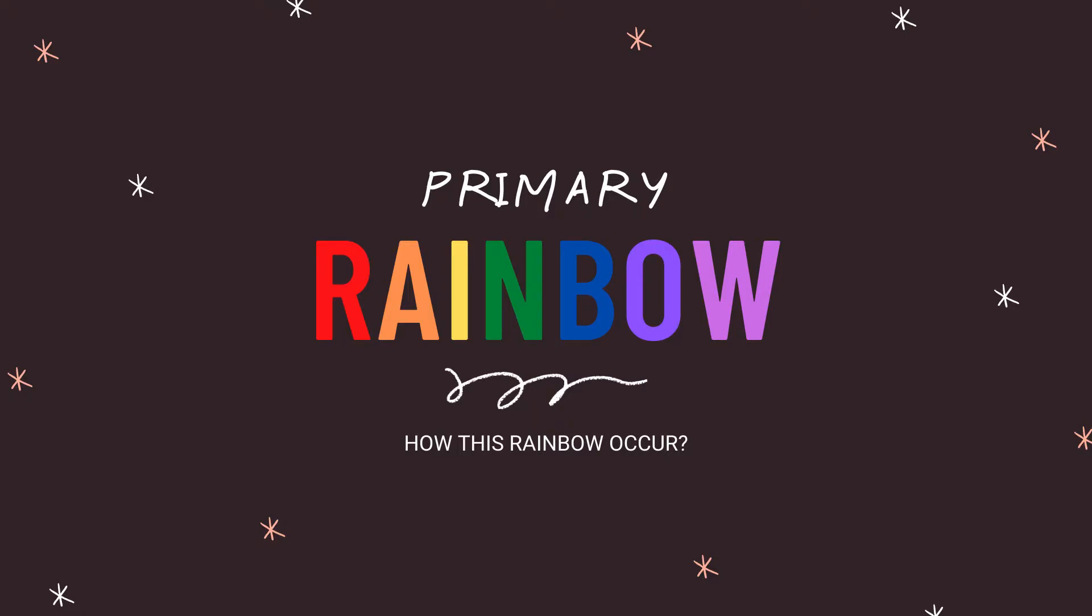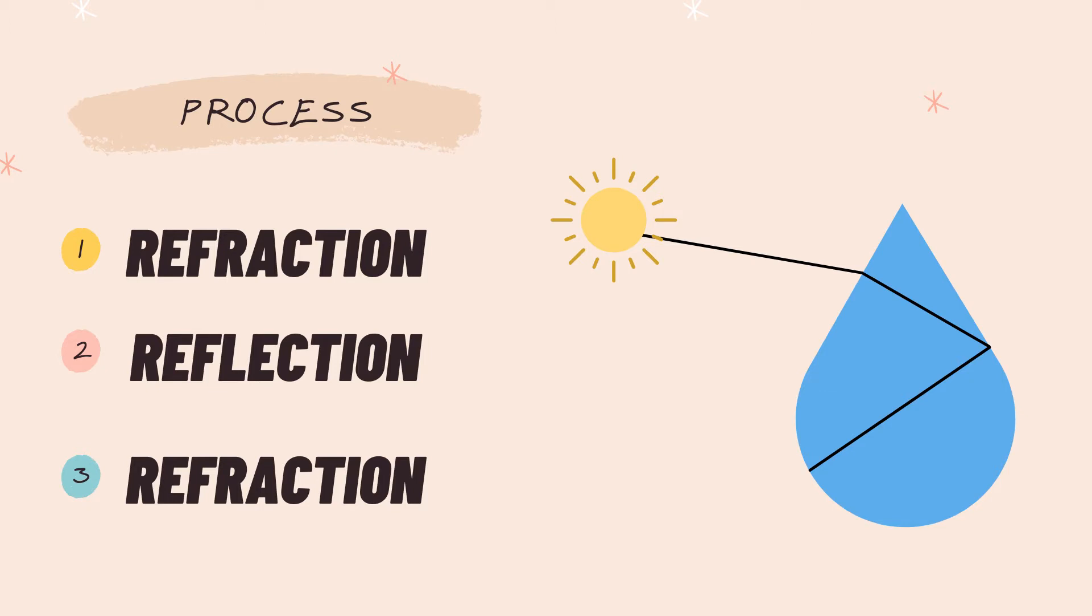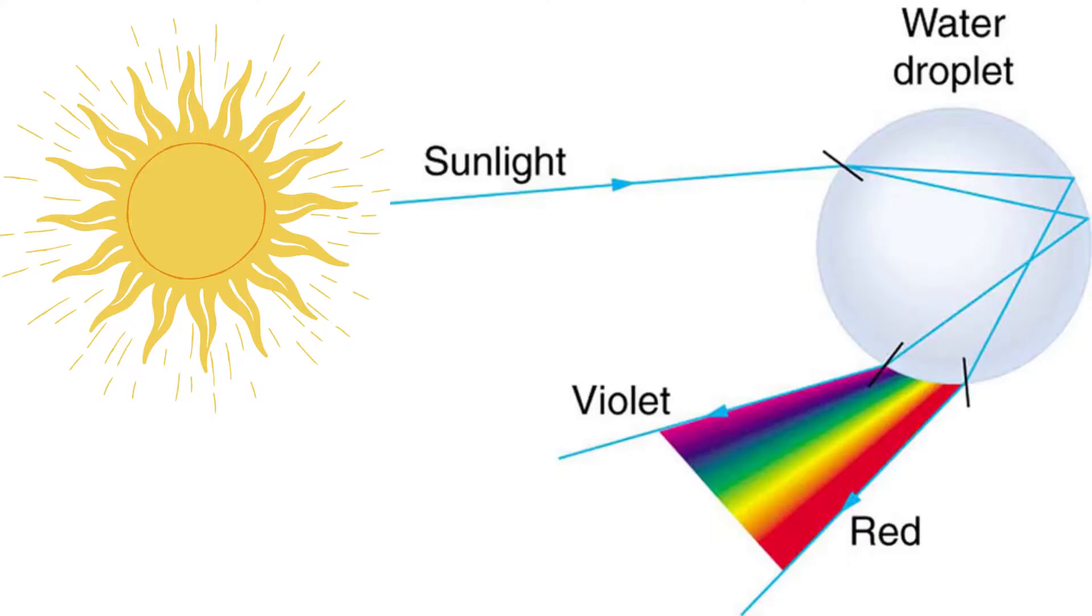How does a primary rainbow occur? Primary rainbows form in a three-step process which includes refraction, reflection, and refraction. These are the steps on how the primary rainbow forms.